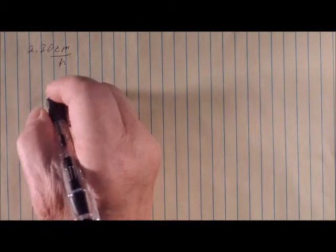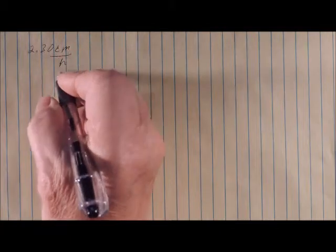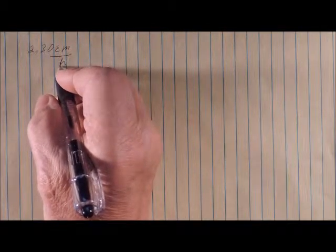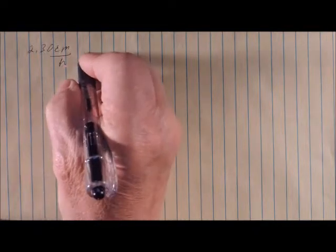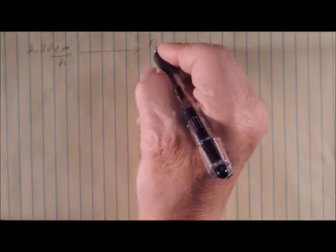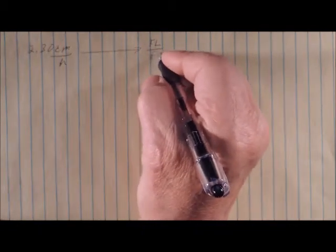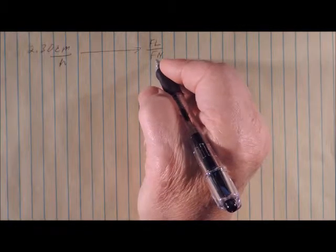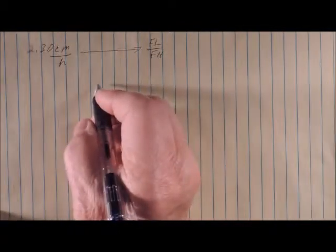The units of measurement that we're using is a length dimension, centimeters, and a time dimension, the hour. And we're going to convert that to furlongs. I'll use FL for furlong and FN for fortnight. So it's furlongs per fortnight. So that's the conversion we're going to make.